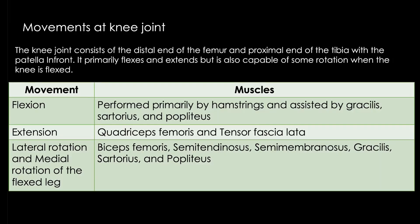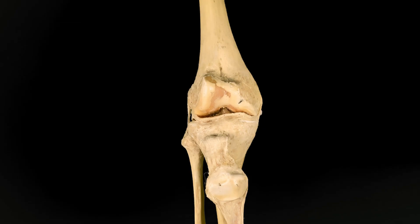The muscles that bring movements at the knee joint: for flexion, the primary work is performed by the hamstrings, with assistance from the sartorius, popliteus, and gracilis. For extension, the major role is played by the quadriceps femoris — rectus femoris, vastus lateralis, vastus medialis, and vastus intermedius — assisted by tensor fasciae latae. For lateral and medial rotation, contributions come from the biceps femoris, semitendinosus, semimembranosus, gracilis, sartorius, and popliteus.